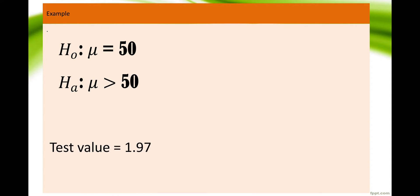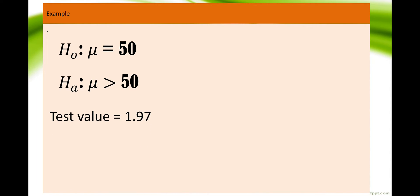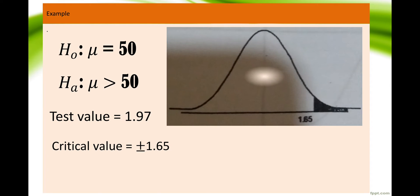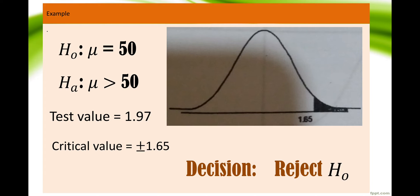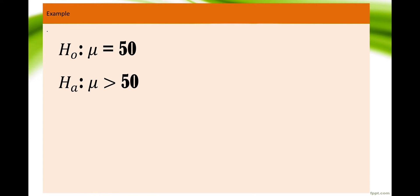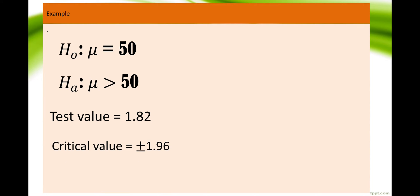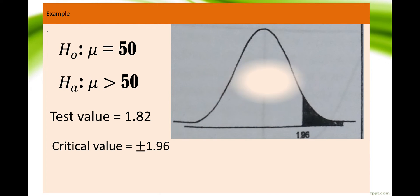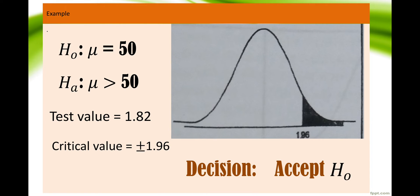Example 3: The alternative hypothesis is greater than 50 (right-tailed), the test value is 1.97, and the critical value is 1.65. Since the test value 1.97 is greater than the critical value 1.65, the decision is to reject the null hypothesis. Example 4: The alternative hypothesis is greater than 50 (right-tailed), the test value is 1.82, and the critical value is ±1.96. Since 1.82 is less than 1.96, the decision is to accept the null hypothesis.